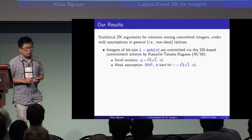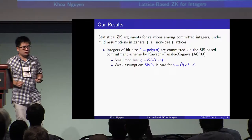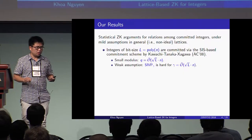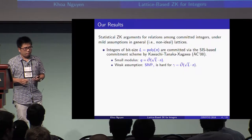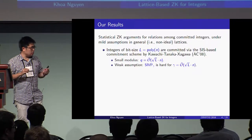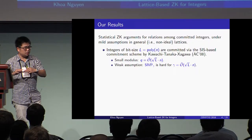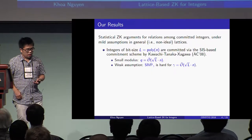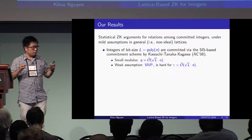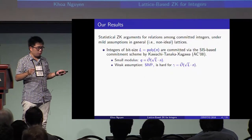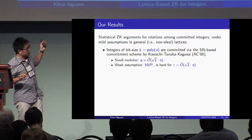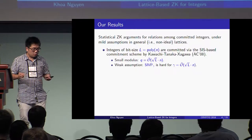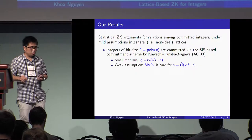Our results are as follows. We provide statistical zero-knowledge arguments for relations among committed integers under very mild assumptions in general lattices. In our protocol, integers of polynomial bit size are committed via the SIS-based commitment scheme by Kawachi, Tanaka, and Sagawa at ASIACRYPT 08. We only require a very small modulus — a small polynomial — and we require a relatively weak assumption: SIS_{gamma} for gamma around sub-O of square root of L multiplied by the security parameter N.